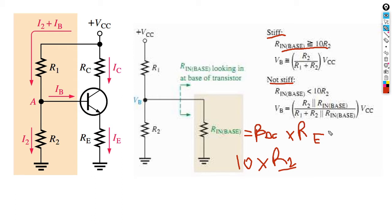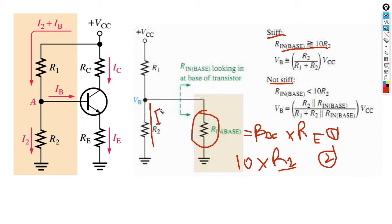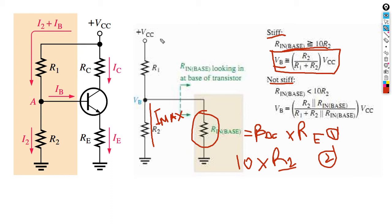The circuit is stiff when R-in-base is greater than 10 times R2. The reason you always calculate this first is to check if your circuit is stiff. When R-in-base is bigger than 10R2, the maximum current will flow through R2, and minimum current through R-in-base. Because of that, when calculating V-base, we ignore R-in-base and apply the voltage divider formula: V-base equals R2 divided by (R1 plus R2), times VCC.